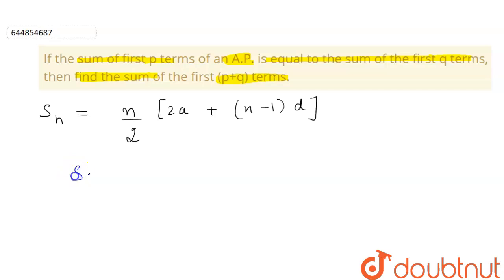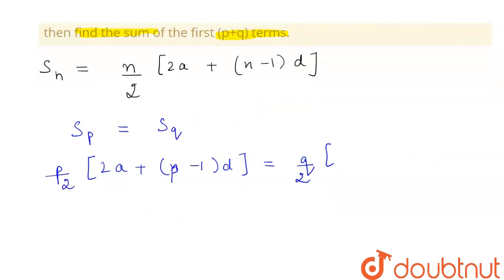Now we are given that sum of P terms is equal to sum of Q terms. If we substitute the value of N to be P, this will be P by 2 into 2A plus N minus 1, sorry, N here is P, so this will be P minus 1 into D which is equal to Q by 2. Now, we see that this is the terms of the same series. Therefore, their A and D will be equal. So, this is equal to 2A plus Q minus 1 into D.